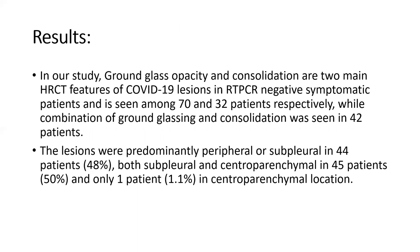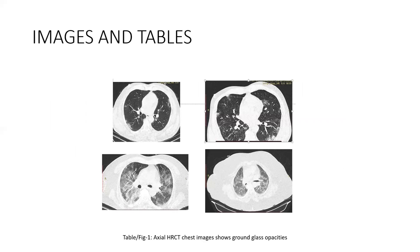Coming to results: in our study, ground glass opacity and consolidation are the two main HRCT features in RT-PCR negative symptomatic patients, seen among 70 and 32 patients respectively, while the combination of ground glass opacity and consolidation was seen in 42 patients. The lesions were predominantly peripheral or subpleural in 44 patients, both subpleural and centroparenchymal in 45 patients, and only one patient had only centroparenchymal involvement.